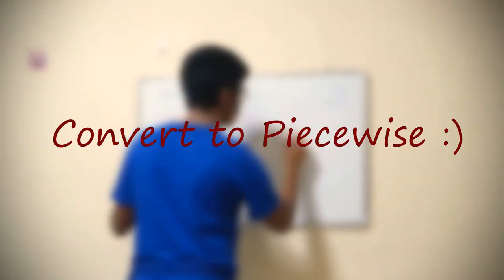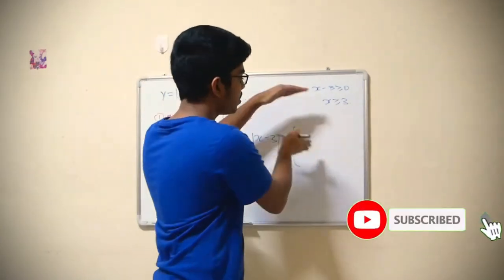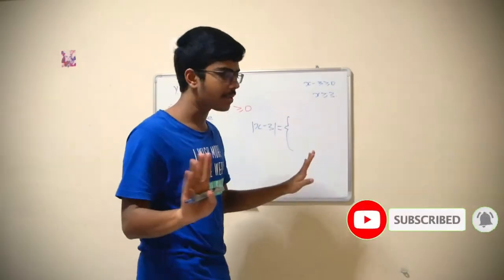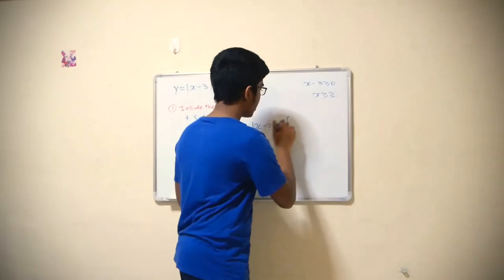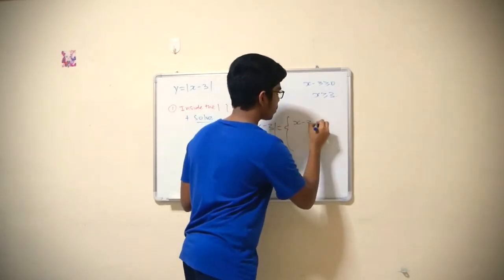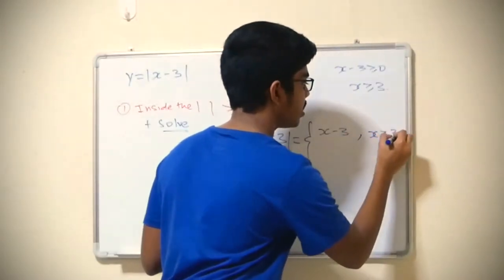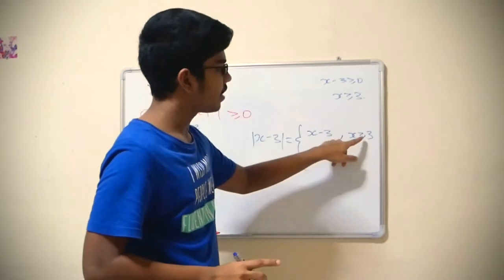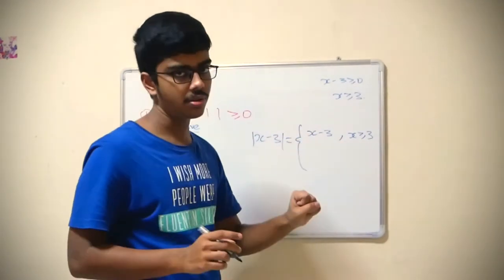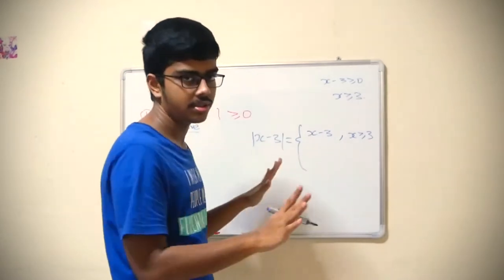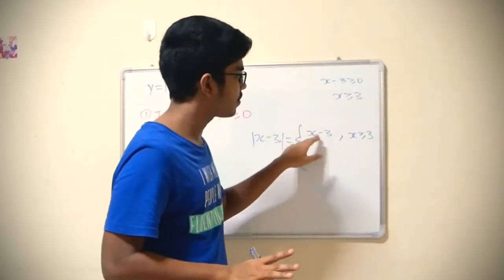So that means when you convert this into a piecewise function, it's just distributing into parts. It becomes x minus 3 if x is greater than or equal to 3. If x is 3, then 3 minus 3 is 0, the modulus function still holds. If it is 4, 5, or 6, this is still positive or equal to 0.